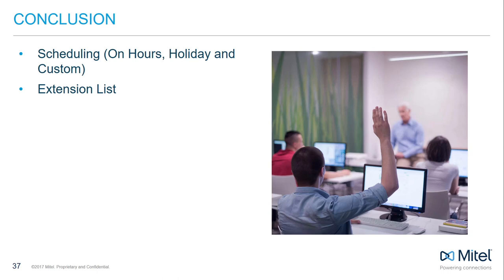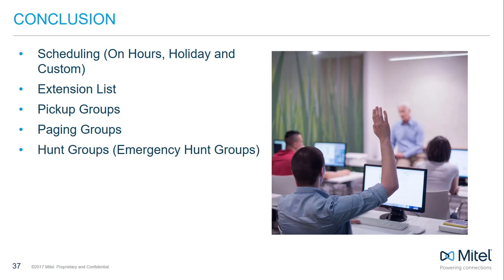Extension lists are utilized by other call flow components to determine included or excluded extensions. Pickup groups allow users to pick up others' phone calls when ringing without needing to leave their desk. Paging groups allow IP telephones to be used as paging speakers for messages sent to all members. Hunt groups ring based on distribution programming — simultaneously or top-down — and can be redirected outside scheduled hours or if a member is unable to answer. Auto attendance allows calls to be distributed based on caller selections from a predefined list of options.